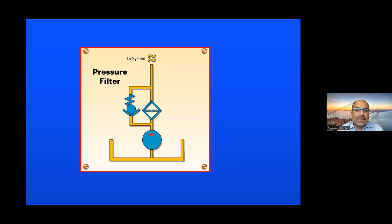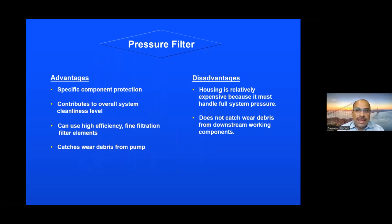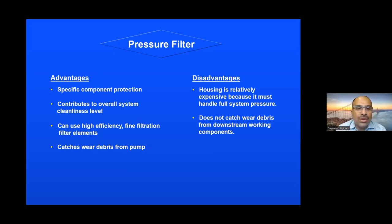The pressure line filter is placed after the pump but before the hydraulic valves, to protect expensive components - especially proportional and servo valves. Very fine, high-efficiency filter elements of 1, 2, 3, or 5 microns are used here. It contributes to overall system cleanliness, and captures any debris generated by the pump. These filters handle very high pressures - manufacturers make pressure line filters up to 400 bar - making them the most expensive filters. However, this filter does not come in contact with oil returning from the actuators.